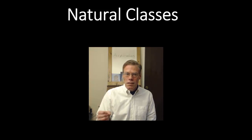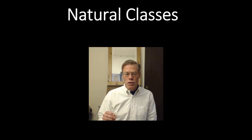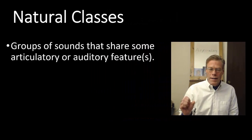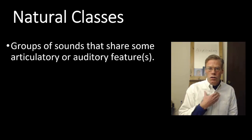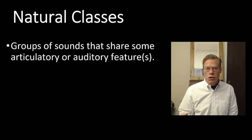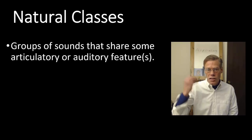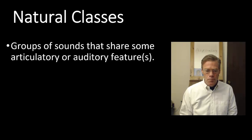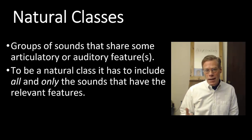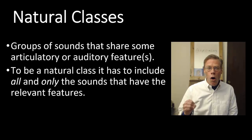What generalizing means in phonology is positing natural classes. A natural class is a group of sounds that share some articulatory or auditory features. Articulatory features have to do with how we produce the sounds; auditory features have to do with how the sounds actually sound — the patterns in the airwaves themselves. To be a natural class, it has to include all and only the sounds that have the relevant features.